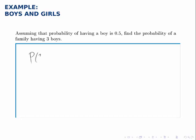The probability of having three boys is equal to the probability of having a boy first and a boy second and a boy third.